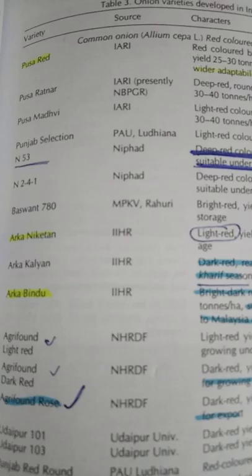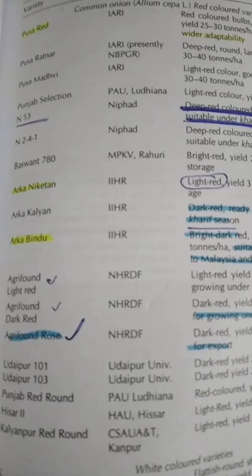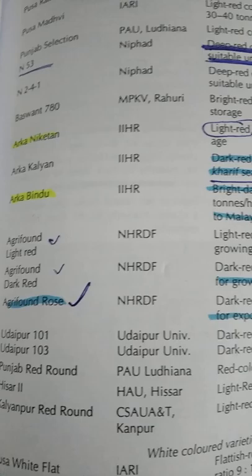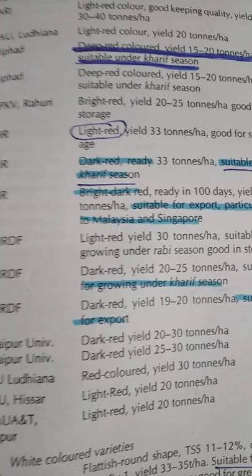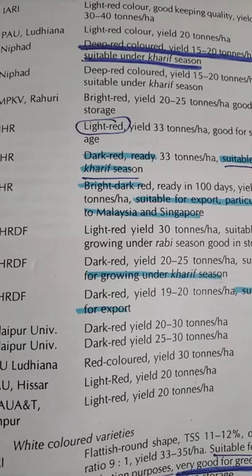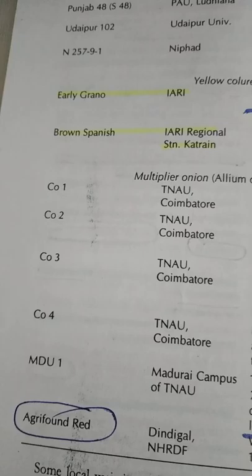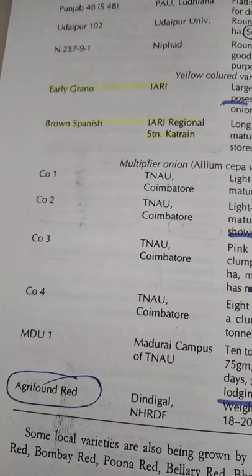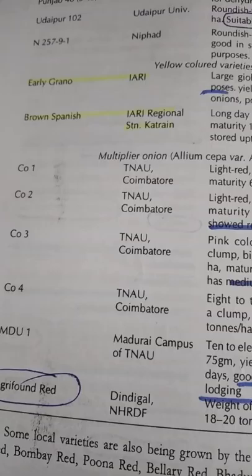Important onion varieties: Pusa Red, Arka Niketan, Arka Bindu, Agri-Found Rose, Agri-Found Light Red, and Agri-Found Dark Red. Remember: Agri-Found Dark Red is suitable for growing under Kharif season, while Agri-Found Light Red is for Rabi season. Also important: Alli-Grano, Brown Spanish, and Agri-Found Red.